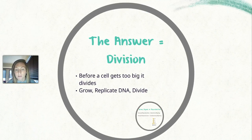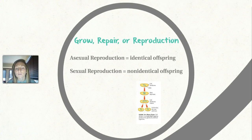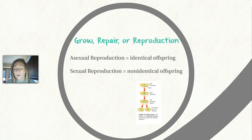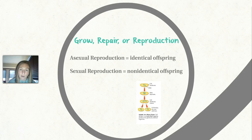So the answer to our problem is division. Before a cell gets too big, it's going to divide — it will grow first, replicate its DNA, and then divide. Cells will divide for growth, for repairing purposes, or for reproduction. There are two types of reproduction: asexual reproduction results in identical offspring, usually seen with plants and bacteria or prokaryotes. Sexual reproduction happens with all other organisms and results in non-identical offspring, such as ourselves. We don't look exactly like our parents, but bacteria always look like their parents, and most plants will look exactly like their parent plants.